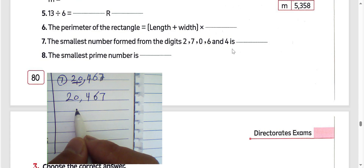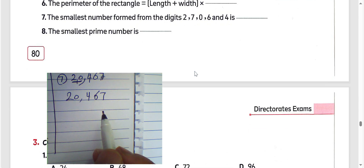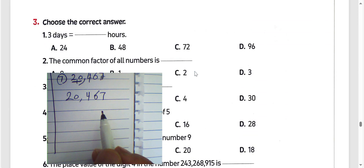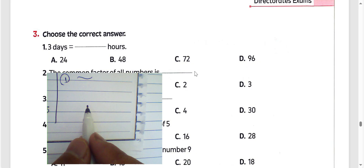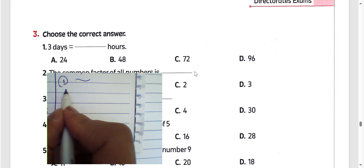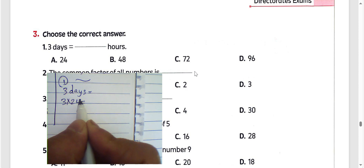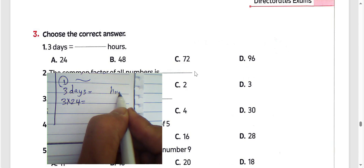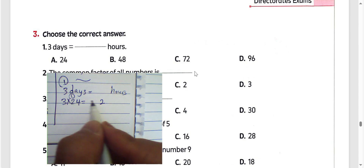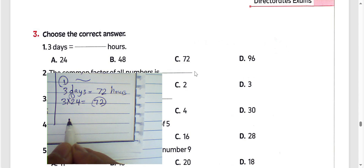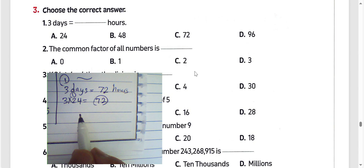Then the smallest number would be 20,467. Next, question number 3, which is the correct answer: 3 days equals how many hours? We know 1 day equals 24 hours, so 3 days equals 3 times 24. 3 times 4 is 12, carry 1; 3 times 2 is 6 plus 1 equals 7. The result is 72 hours. Choose letter C.